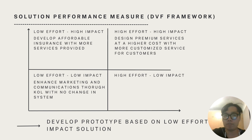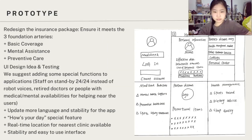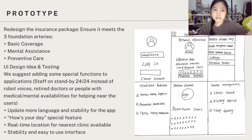Now we're going to talk about the prototype stage. Hello, my name is Hoia, and I'll continue with the prototype. Firstly, we have redesigned the insurance package to ensure it meets three foundational areas: basic coverage, mental health assistance, and preventive care.